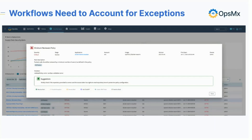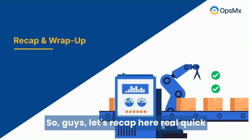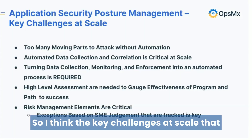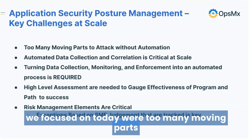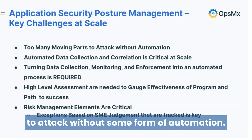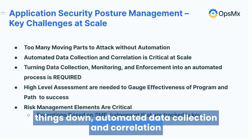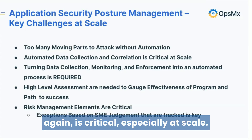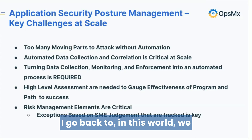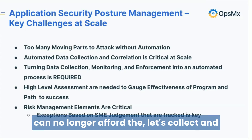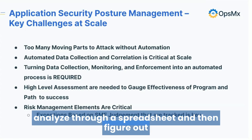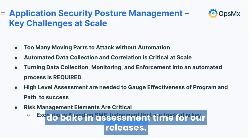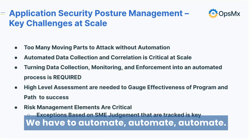Let's recap. The key challenges at scale we focused on today: too many moving parts to attack without some form of automation. Automated data collection and correlation is critical, especially at scale. We can no longer afford the approach of collecting and analyzing through a spreadsheet and then making an assessment for releases. We no longer have that kind of time. We have to automate, automate, automate.